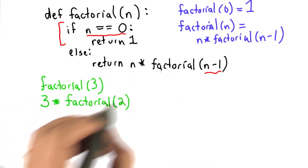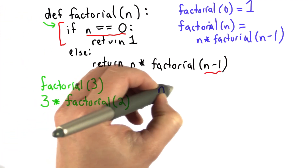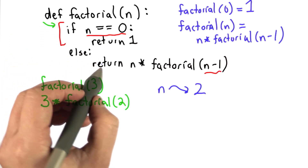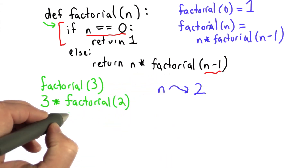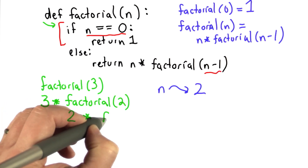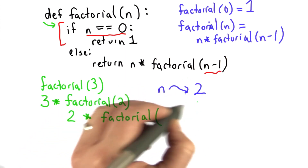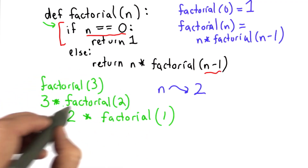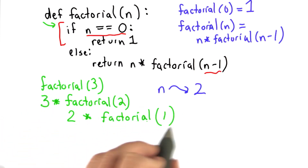But we're not done - we still need to evaluate this. So now we're evaluating factorial of 2. That means we're entering factorial again, this time the value of n refers to 2. We do the comparison - n is not equal to 0, so we go to the else clause. Now we're going to return n times factorial of n minus 1. In this case n is 2, so factorial of 2 will be 2 times the result of calling factorial passing in 1. Remember, that was part of the return where we had 3 times factorial 2, so now we're getting factorial 2 as 2 times something. We're calling factorial again and we still don't know what factorial of 1 is.